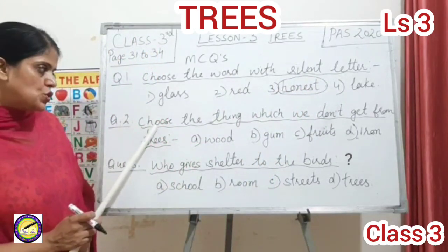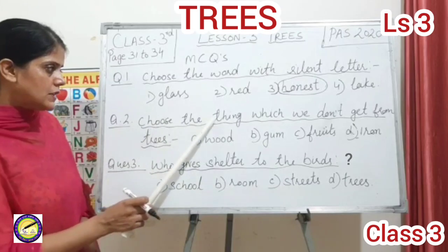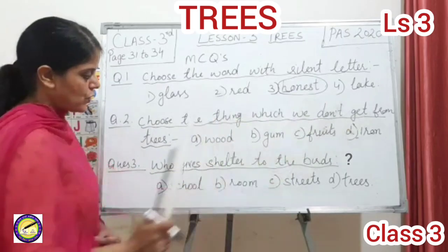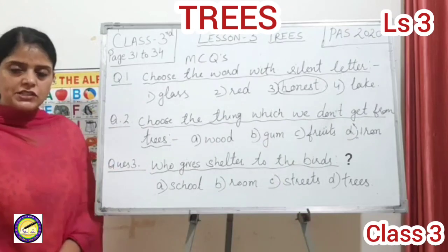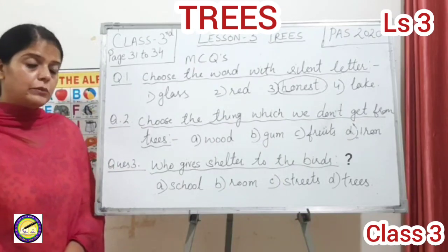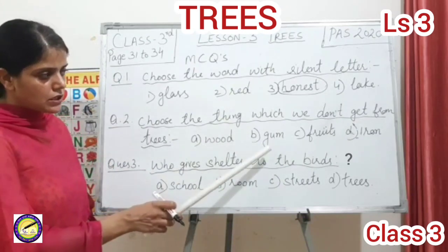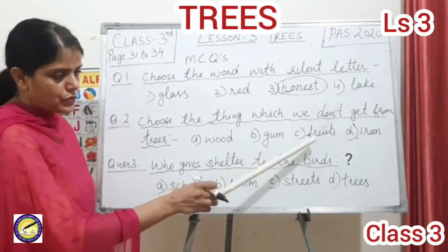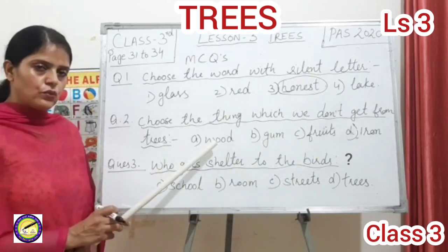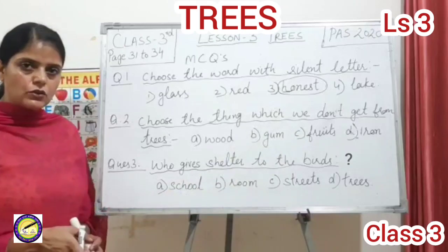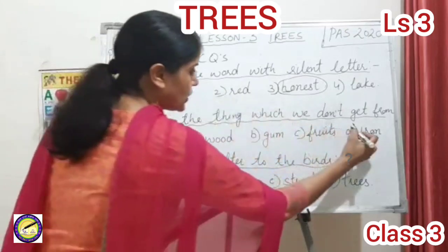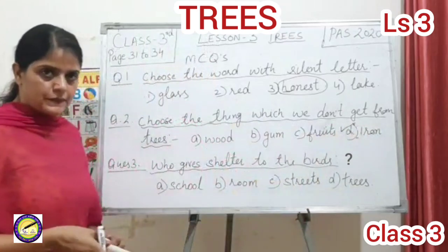Second question: choose the thing which we don't get from trees. Options are wood, gum, fruits, iron. Wood, gum, and fruits we all get from trees — but iron we get from the earth. So the answer is iron.